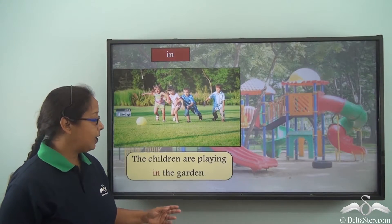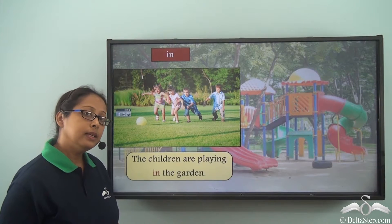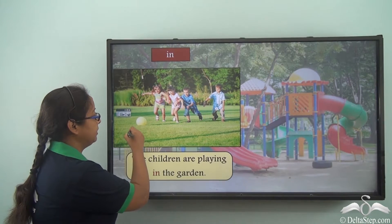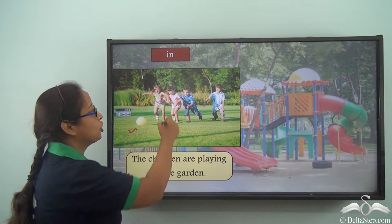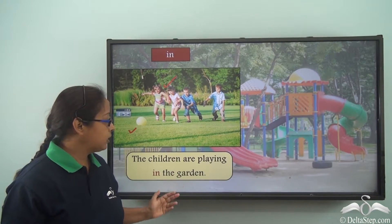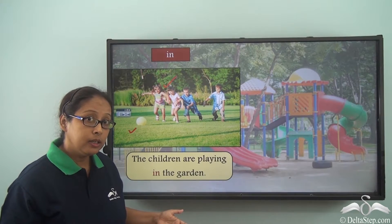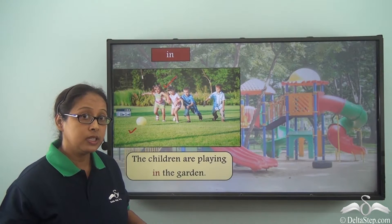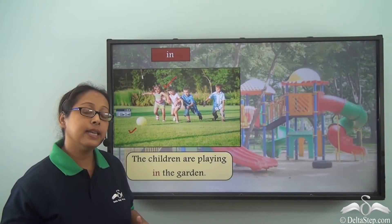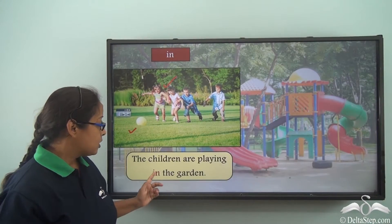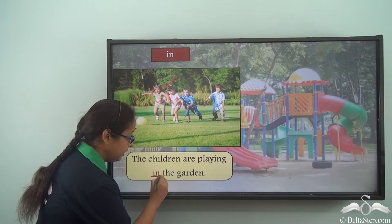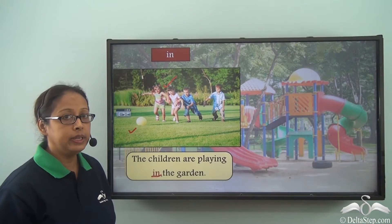The children are playing in the garden. Let's take a look at this picture. This is the picture of a garden and the children are playing here. Can we say the children are playing 'on' the garden? No — it is within a boundary, in a way it is inside. So we use the preposition 'in' to bring out the meaning clearly.